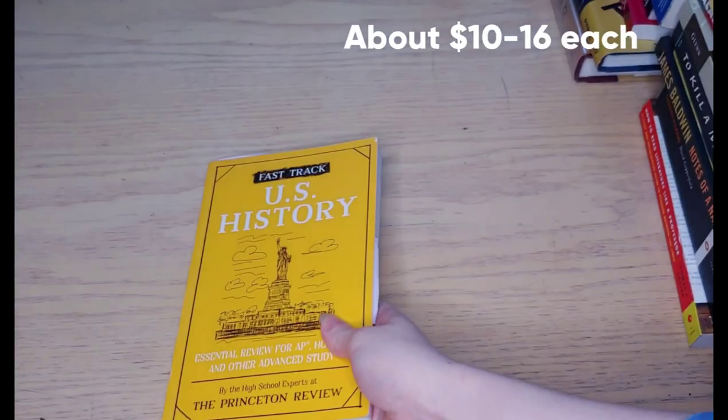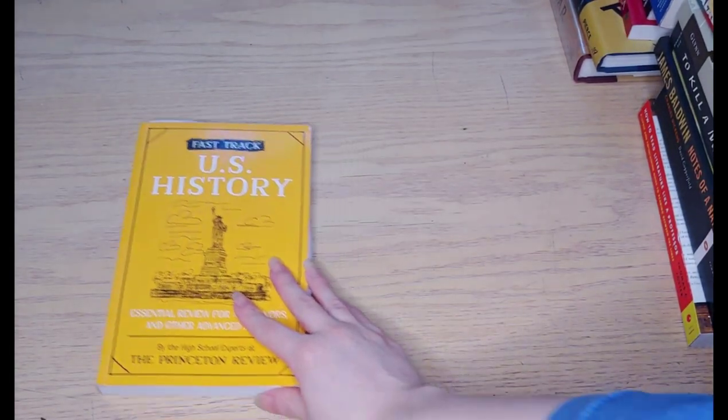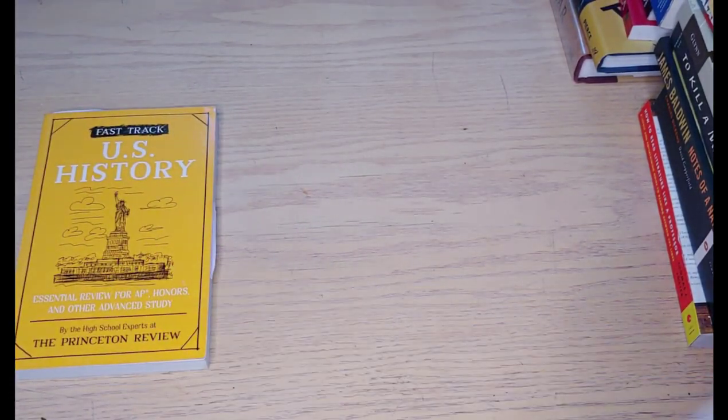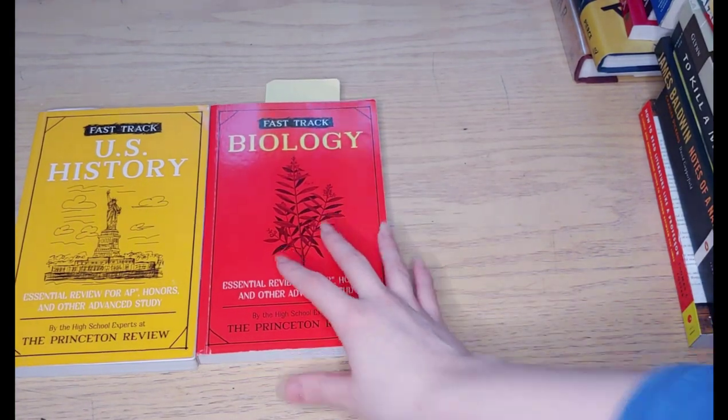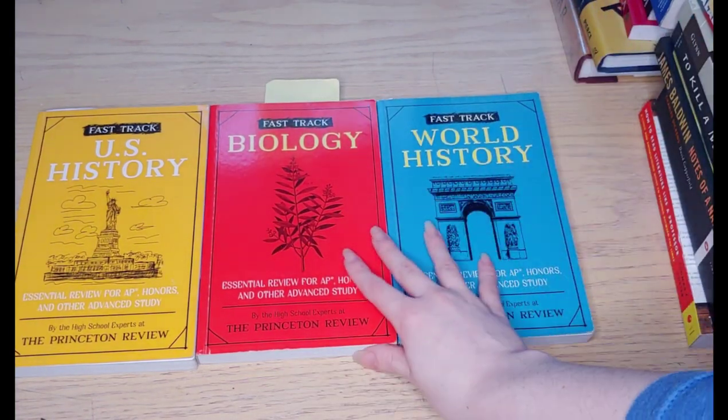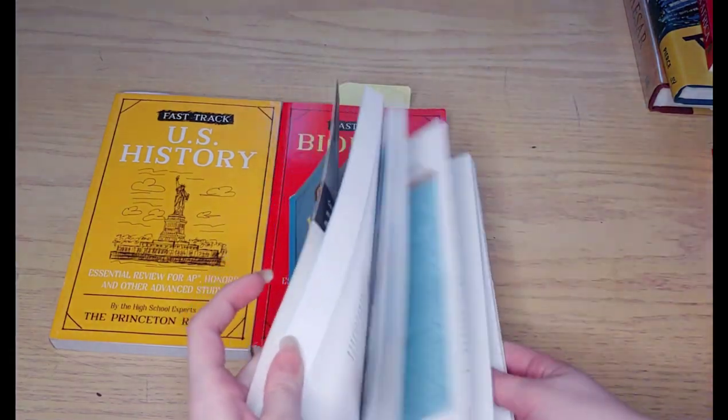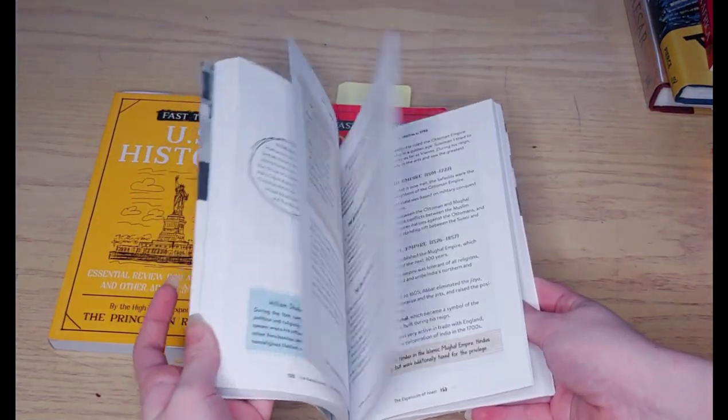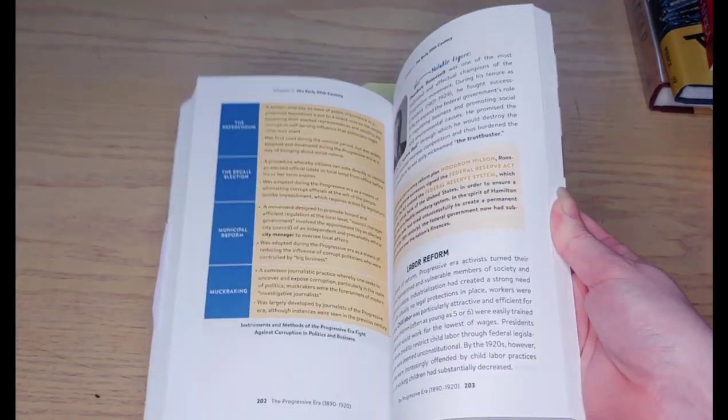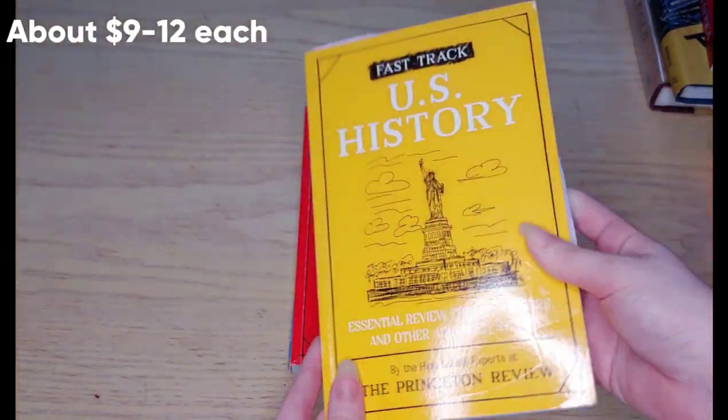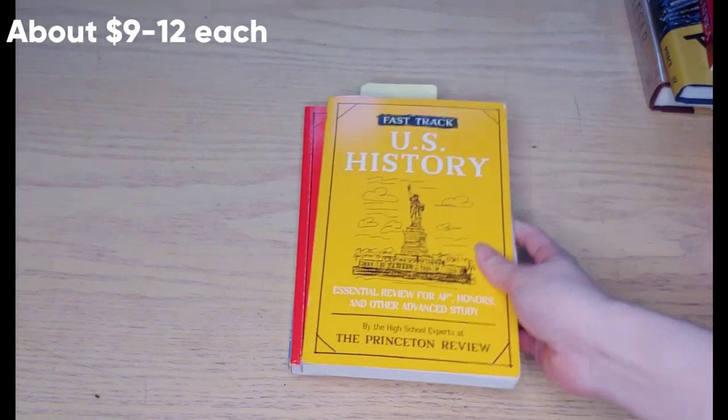The next three books are Fast Track books. We have Fast Track U.S. History, Fast Track Biology, and Fast Track World History. These are great to have. They have pretty much the notes for each topic, each course, and I recommend using this. You can use this as your main book and you take notes.